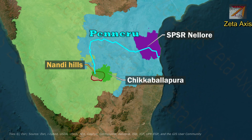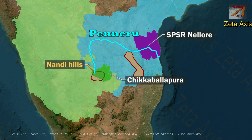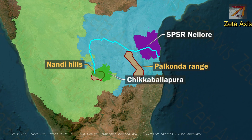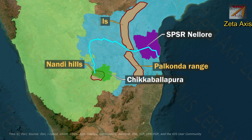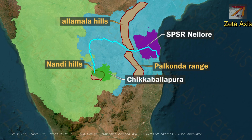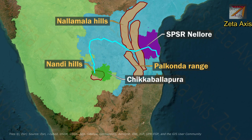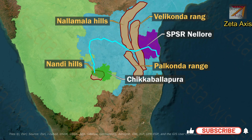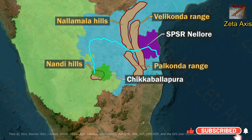The Penneru River passes through north of Palkonda hills and south of Nalimala hills. The river passes through the Velikonda range before meeting the Bay of Bengal in Nellore district.